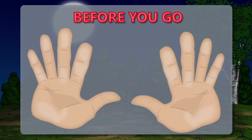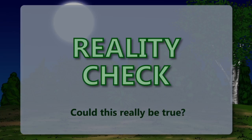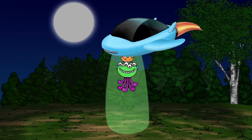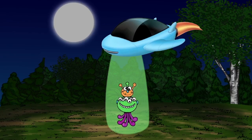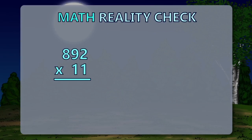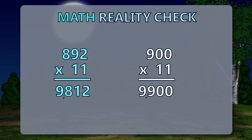Before you go, you should always do a reality check — not like spaceships and aliens, a math reality check. For 892 times 11, let's round 892 up to 900. It's pretty close. So 900 times 11 equals 9,900.